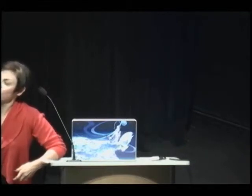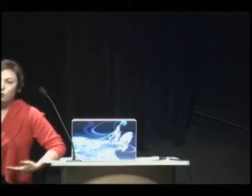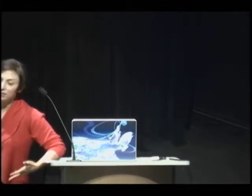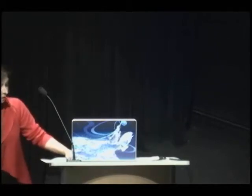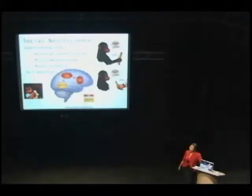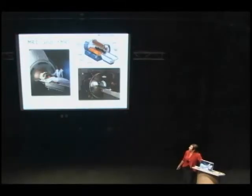This system of brain areas and the computations in them might allow us to make a link between ourselves and others. For this reason, this topic has got a lot of interest from social scientists, because this kind of link might allow us to have capabilities such as empathy, or might be involved in disorders of social functioning, such as autism.